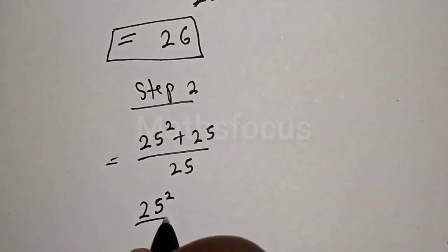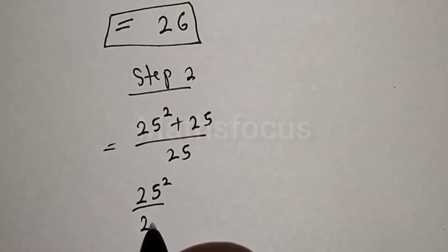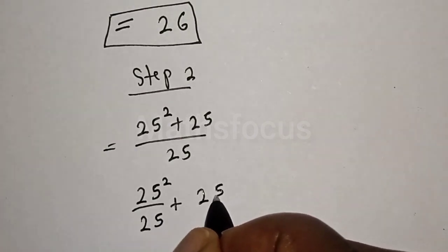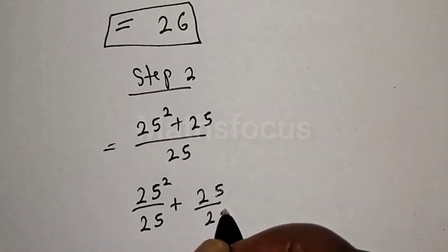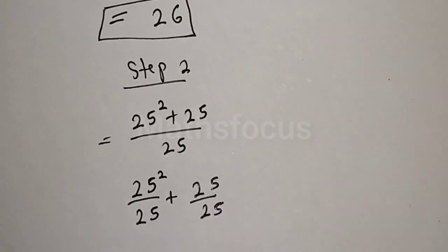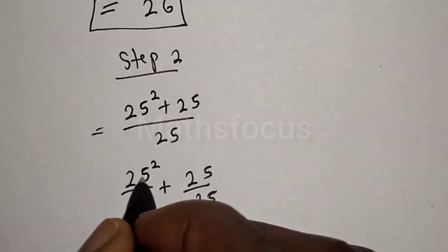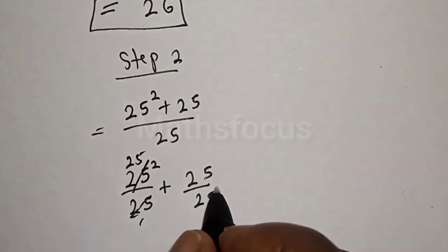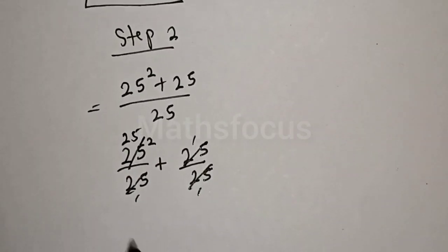Then 25 here, 1-25 here, 25. Then 25 here, 1-25 here, one. So this is equal to 25 plus 1.